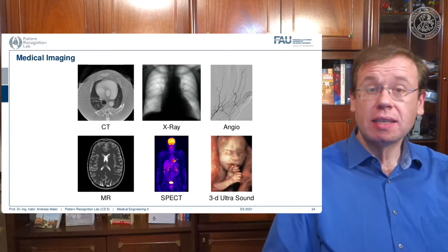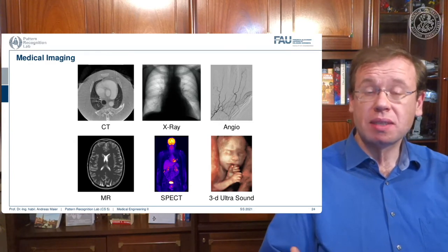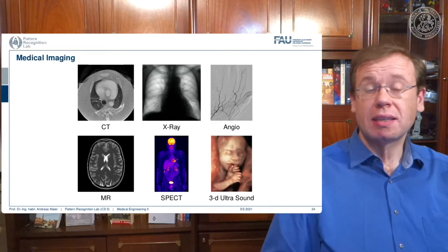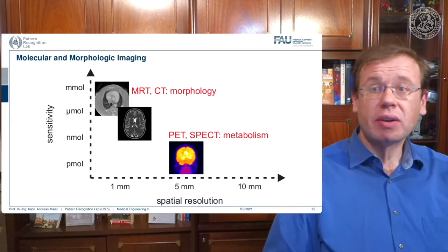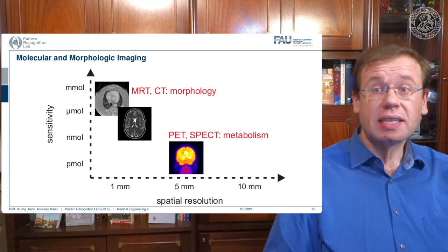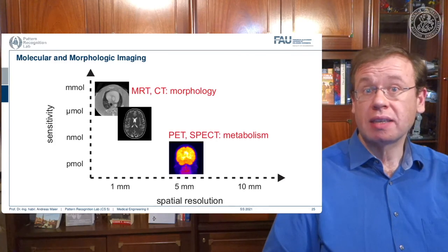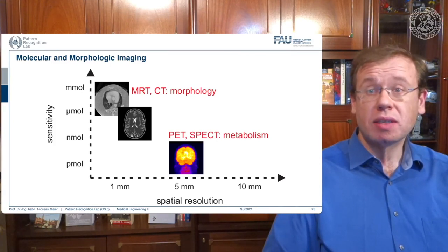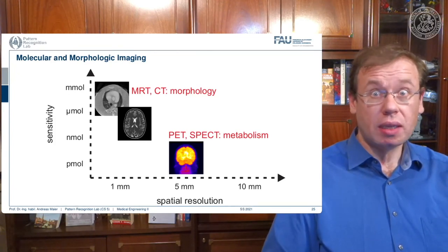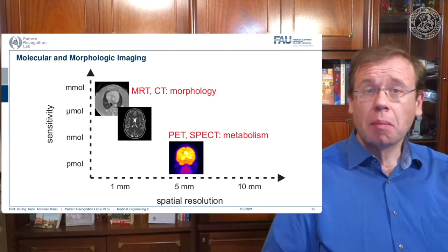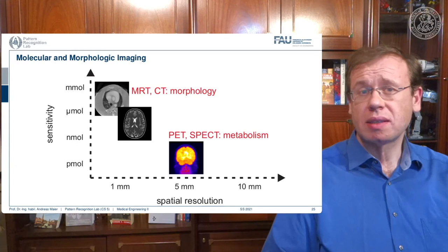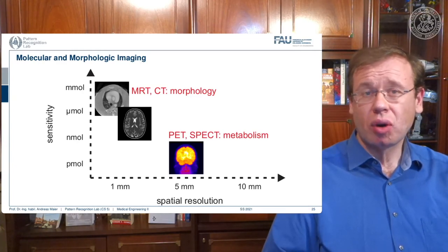Every imaging modality is made for a different purpose, and people will use the best modality for that specific diagnostic task to ensure the patient gets the best treatment possible. There is quite a bit of difference in the images due to image resolution, voxel size, and the contrast they show. CT images, seen here on the top left, have really small voxels so you can see structures very well and resolve really fine details — but they are not as strong in picking up small signals, requiring a high concentration of the tissue under investigation.